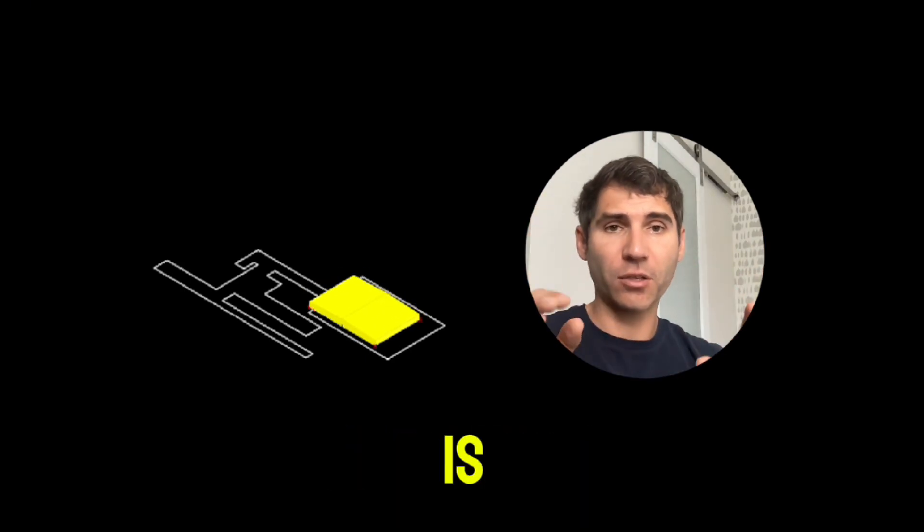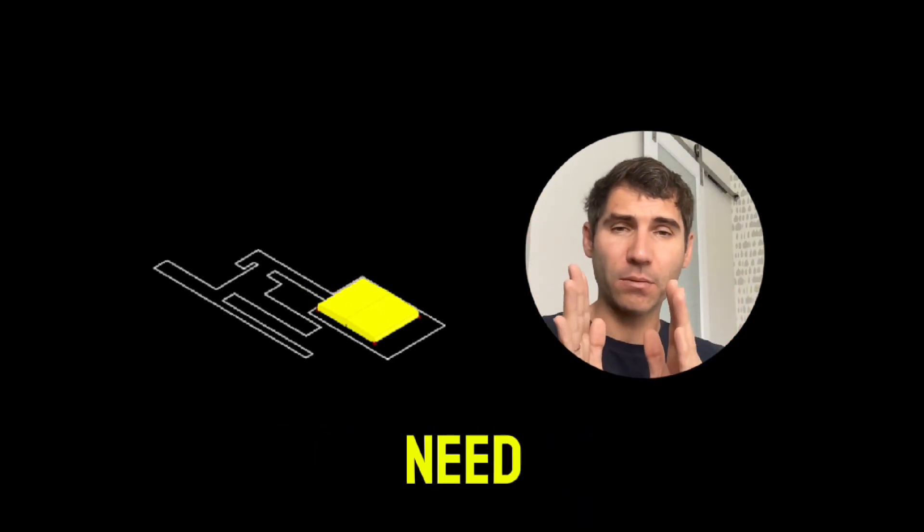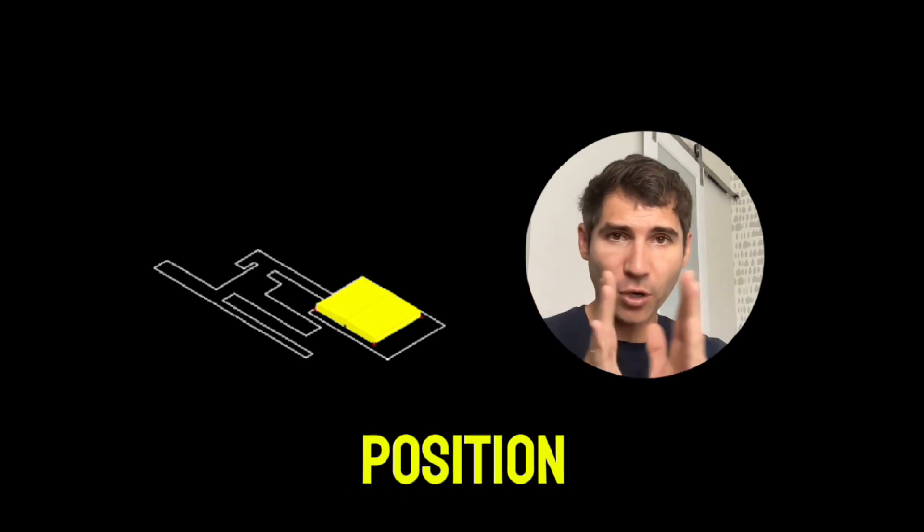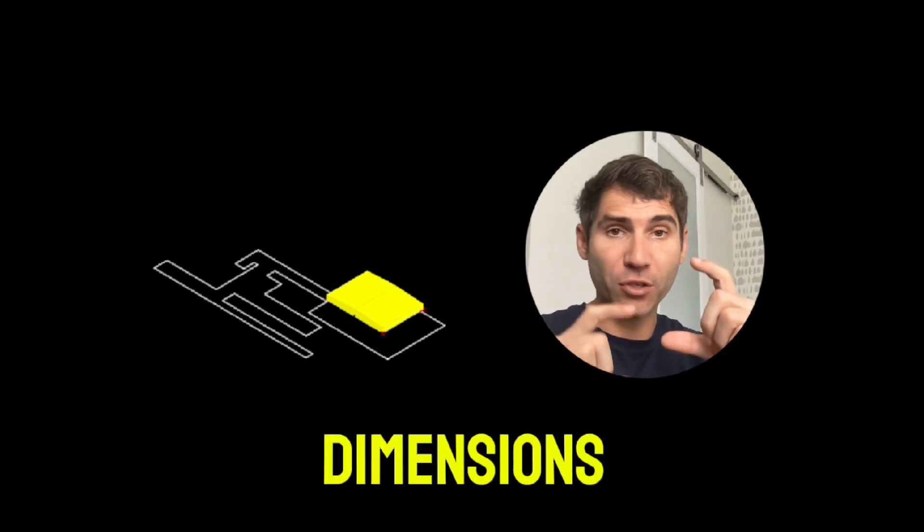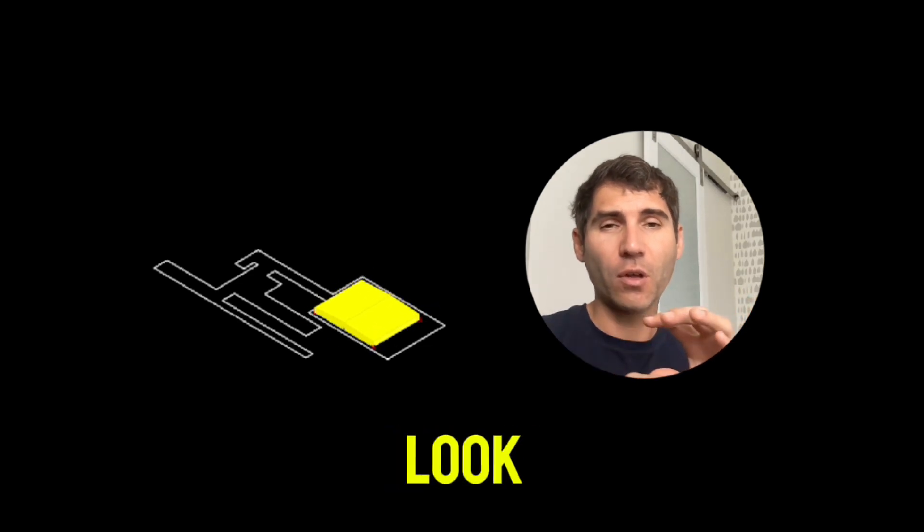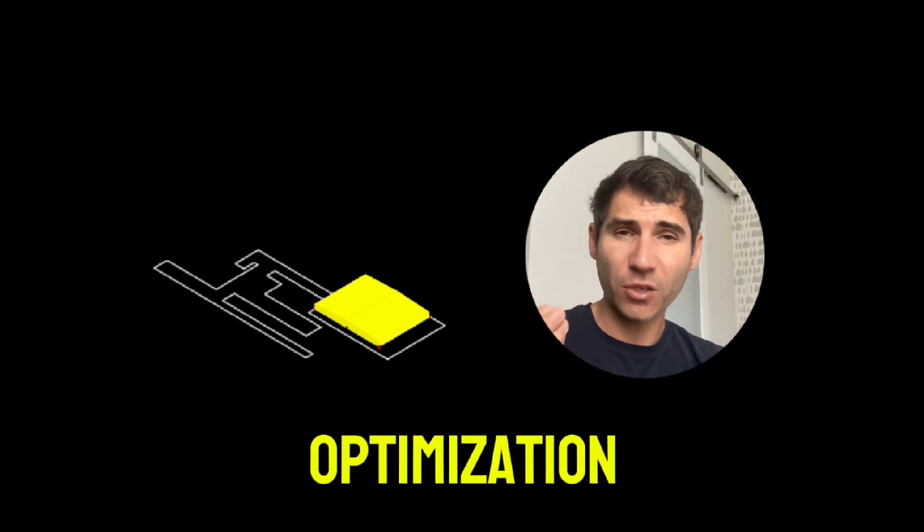But instead of creating random options, it's going to get the parameters that we need, which in this case are the position of the house and the dimension of the house, and it's going to look for an optimization value.